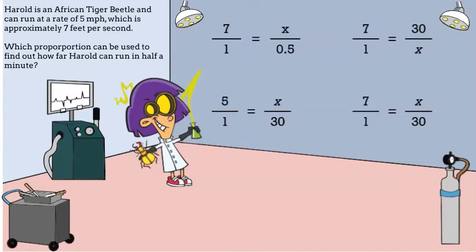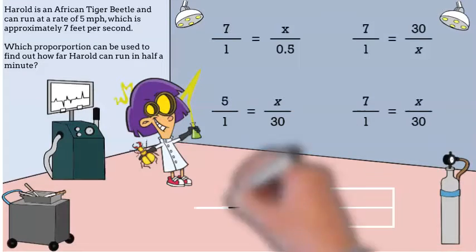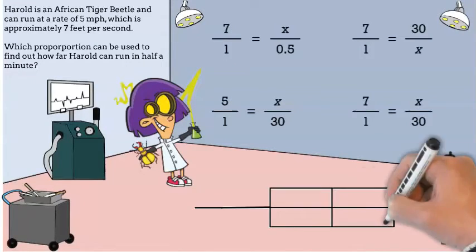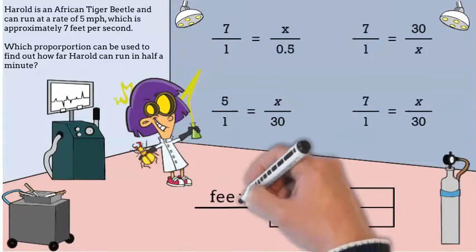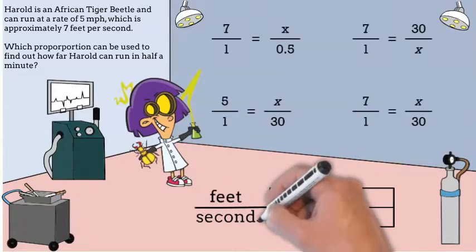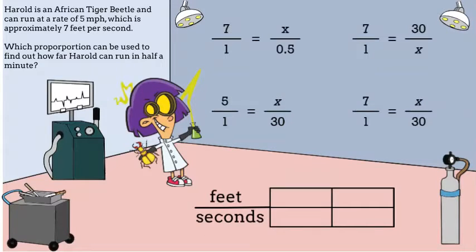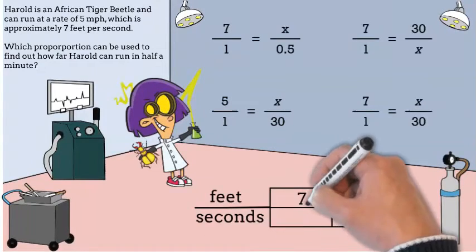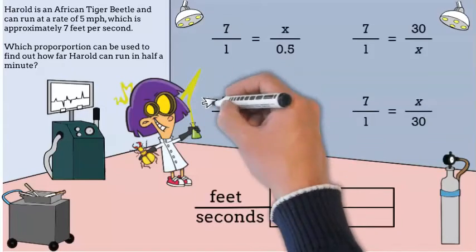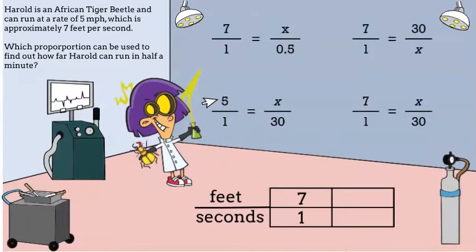Which proportion can be used to find out how far Harold can run in half a minute? First, we'll use a graphic organizer and set up our own proportion. Our labels will be feet per second — he runs seven feet in one second. One of the answer choices uses the five, so we can eliminate that.